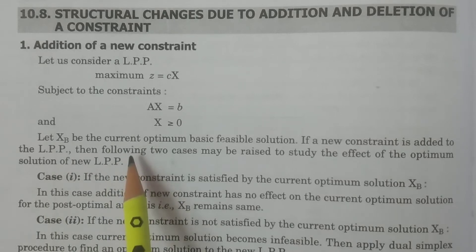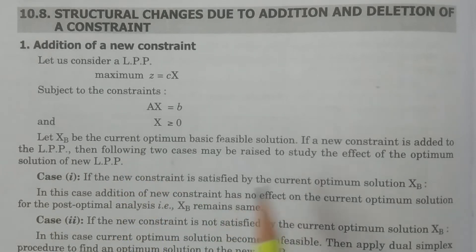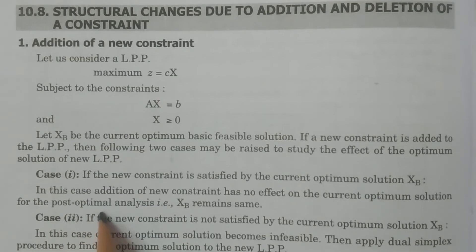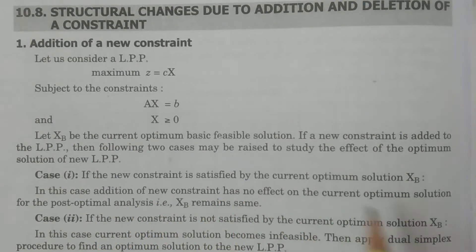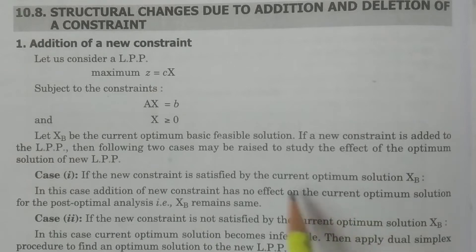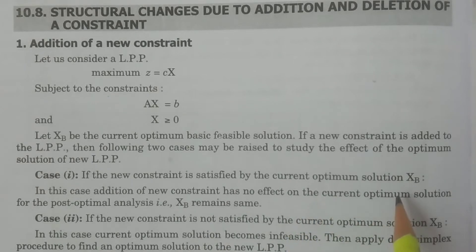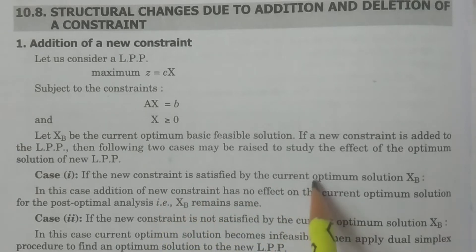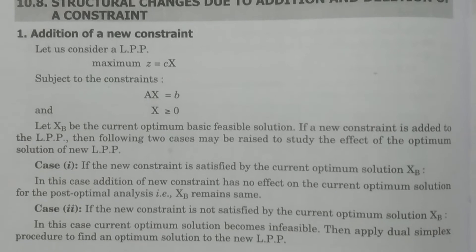We will specify two cases. Case 1: the new constraint is satisfied by the current optimum solution xB. If we add a new constraint and xB satisfies it, then xB remains the same. There is no effect on the current optimum basic feasible solution. If the new constraint is satisfied, that is Case 1 — there is no problem.